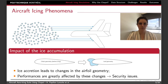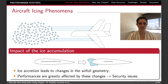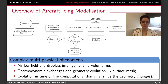Ice accretion happens when an aircraft passes through a cloud of water droplets. The droplets will impinge the surface, leading to thermodynamic exchanges, and ice will accumulate. This ice accretion leads to changes in the airfoil geometry as presented here, and the performances are greatly affected by these changes, resulting in security issues. This is the reason why we want to predict the final ice shape.